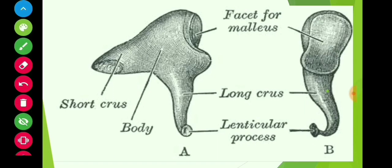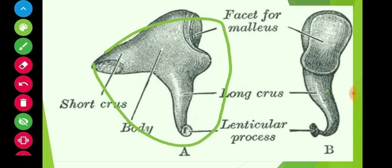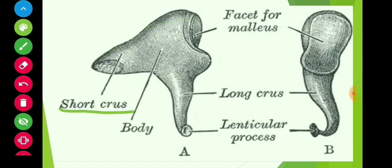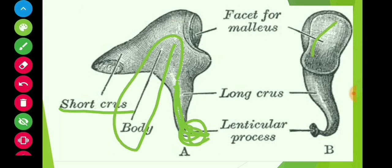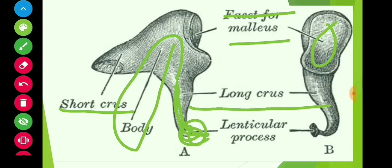In this picture we have shown the incus bone, which is the anvil-shaped irregular bone. This is the short crus of the incus bone. This is the attachment where the stapes is attached with the incus. This is the body of incus. The facet on the malleus is called facet for incus, and on the incus it is called facet for malleus. This is the long crus and this is the lenticular process.